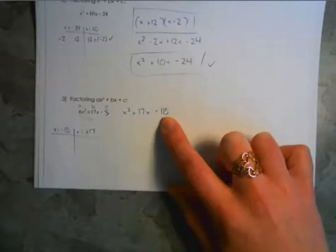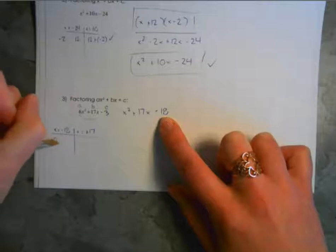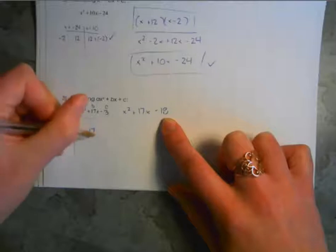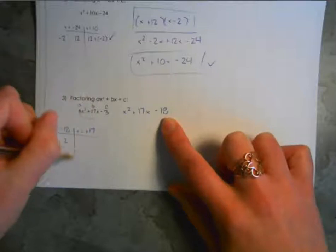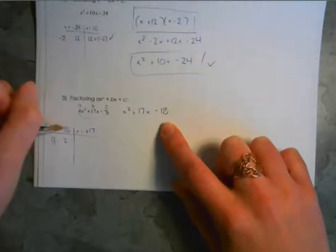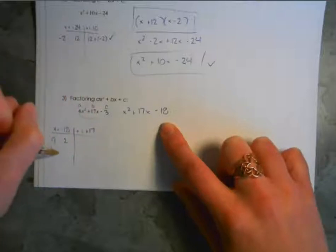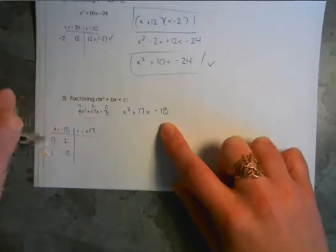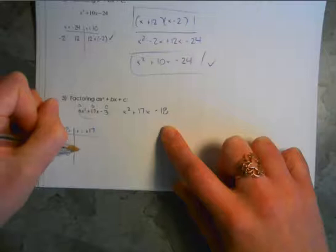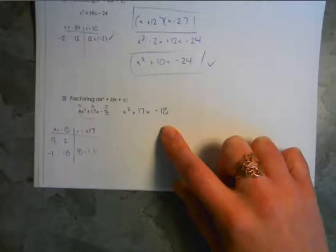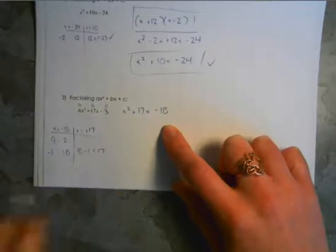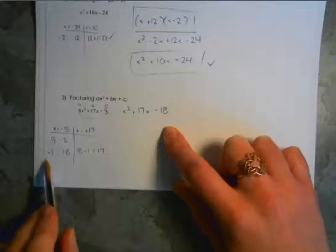You can start by trying 9 times 2 — but 9 plus 2 or 9 minus 2 won't come anywhere close to 17. What about 1 times 18? If we had 18 times negative 1, then 18 plus negative 1 equals 17, which is what we're looking for. So our numbers are positive 18 and negative 1.